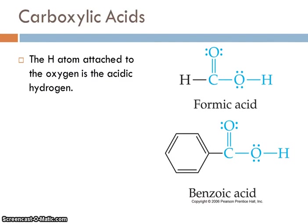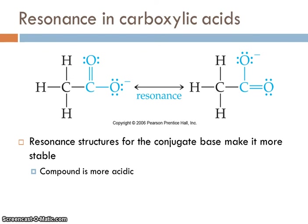In carboxylic acids, the hydrogen atom is attached to the oxygen in the COOH group, and that is the only acidic hydrogen in the formula. Even though there are plenty of other hydrogen atoms — especially in benzoic acid — only the one hydrogen in the COOH group is actually acidic. One reason carboxylic acids are able to act as acids is that when they lose their hydrogen ion through dissociation, you get resonance structures in the carboxylate group that remains. This spreads out the electron density and the negative charge, making the structure more stable and lower in energy. So energetically it's favorable for carboxylic acids to lose that hydrogen ion, which makes the compound more acidic.